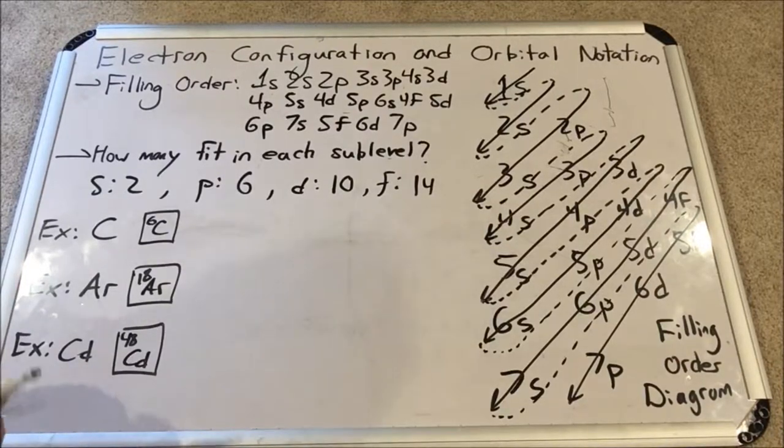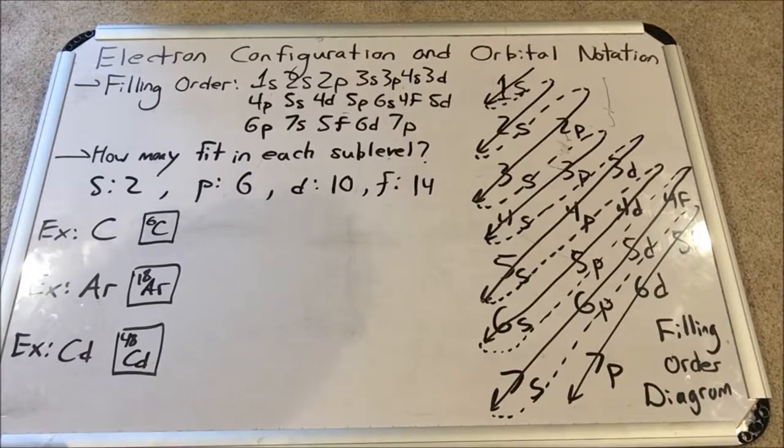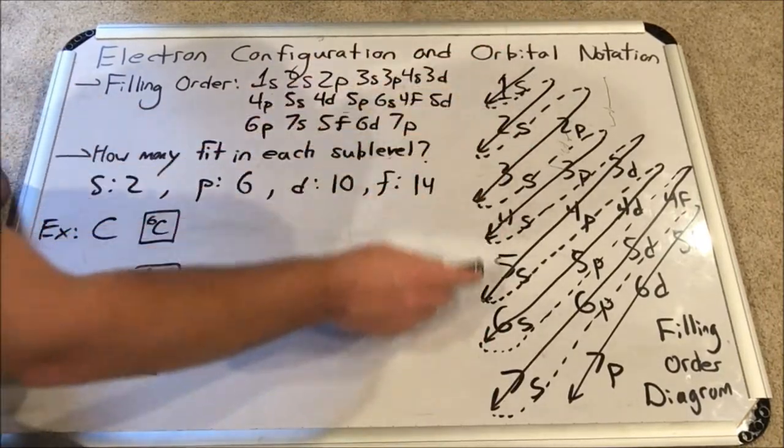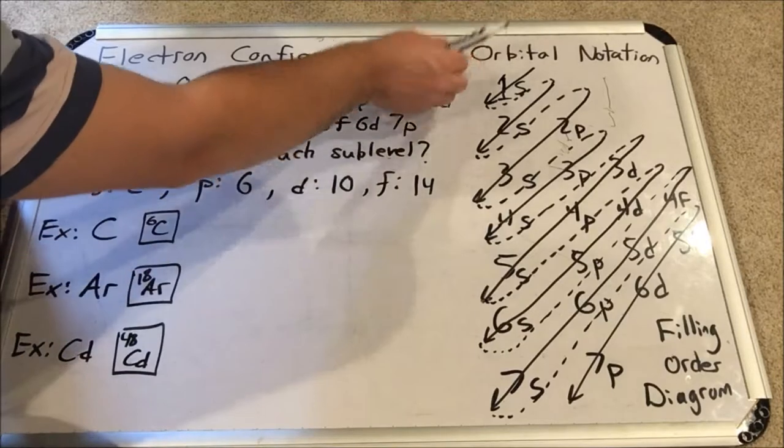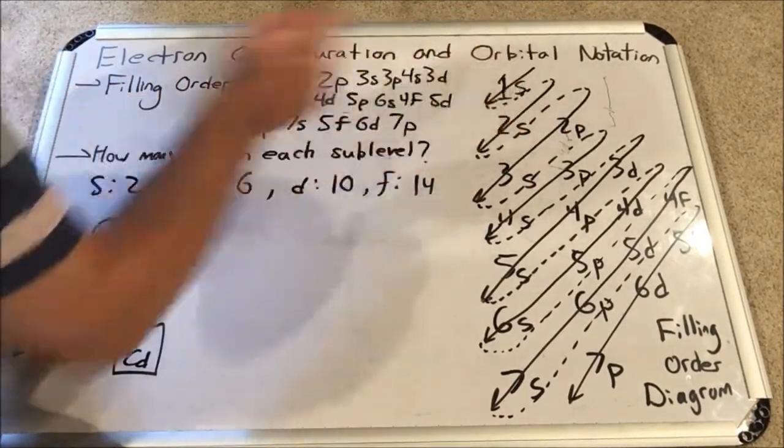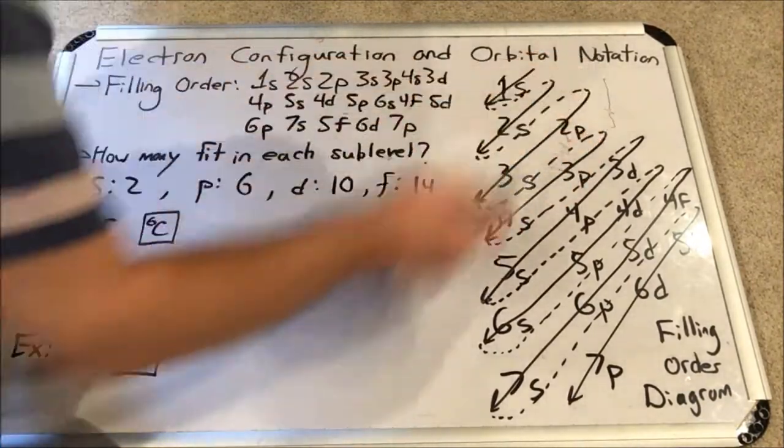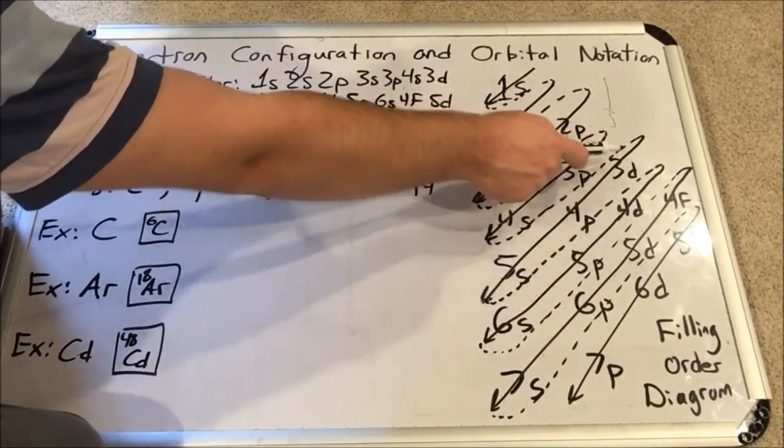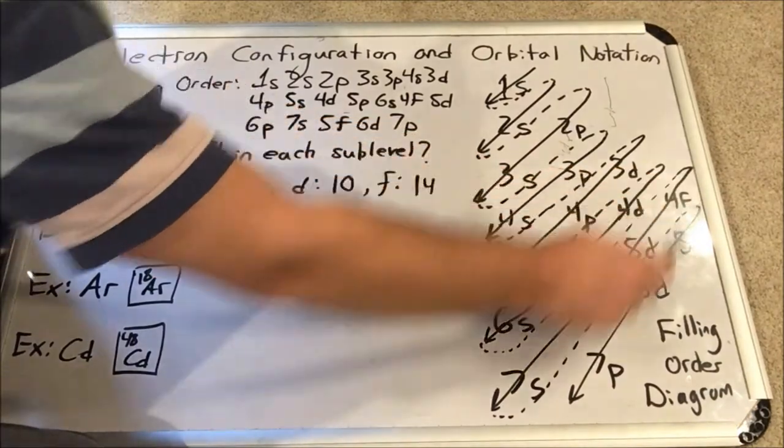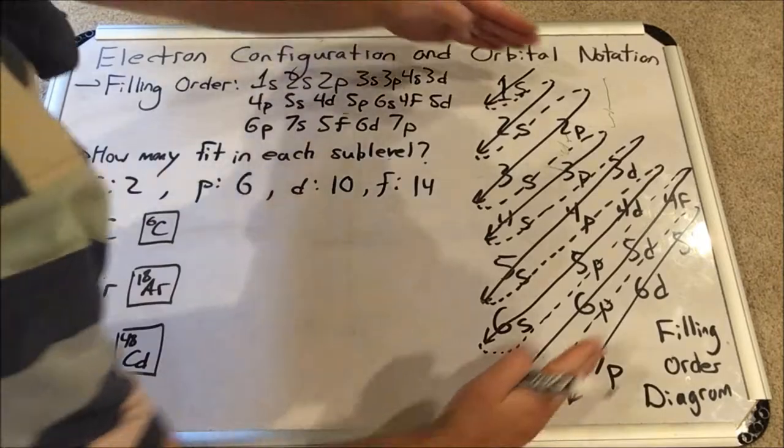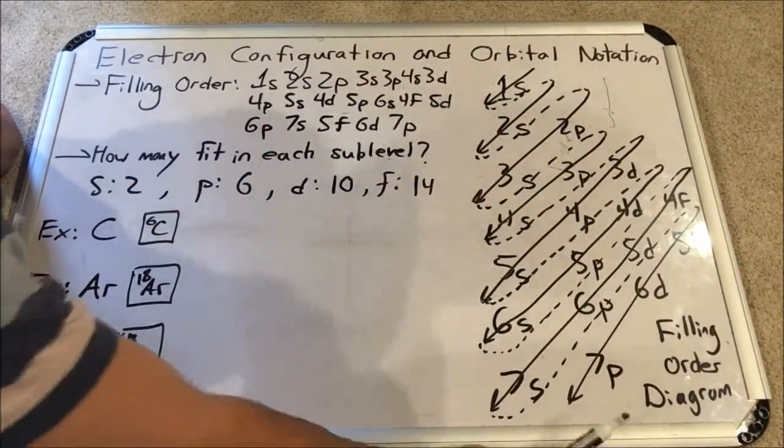There are filling order diagrams all over the internet and I have made one for you here. What it shows you is a pathway you can follow to fill in the correct order. What I've done first is I've written out in columns the principal energy levels and categorized them by sublevel. So all the S's, 1S through 7S, are in the first column. Then I move over, scoot down one because principal energy level 1 doesn't have any other sublevels but S. Then we move to the next column and work through 3D through 6D. Those are actually used on the periodic table. And then the last two are 4F and 5F. This is a filling order diagram.